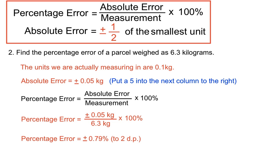That's the margin for error we acknowledge built into a measurement of that parcel expressed as 6.3 kilograms. The system is pretty much the same as before, although in the first example we were measuring in whole metres. Here, because the 0.3 is there, we're effectively measuring in tenths of a kilogram — and that affected our calculation of the absolute error.